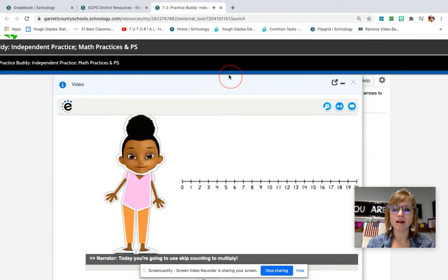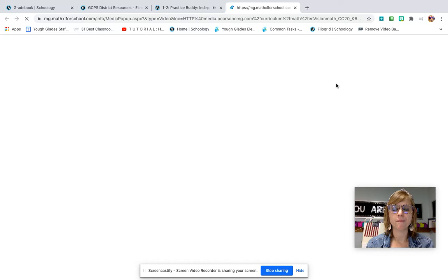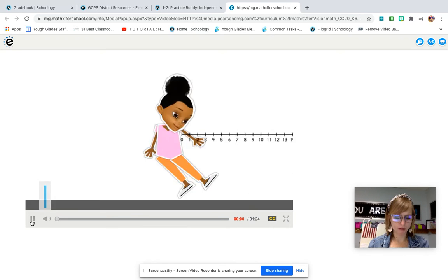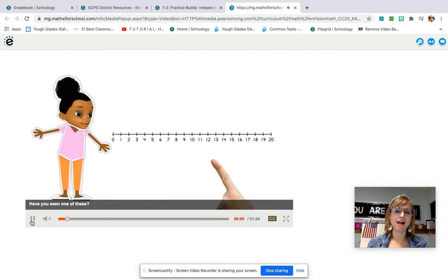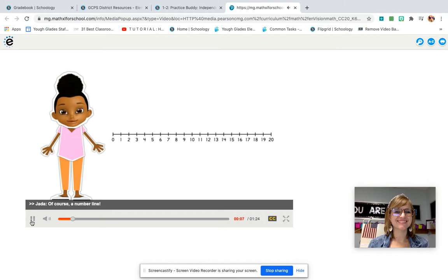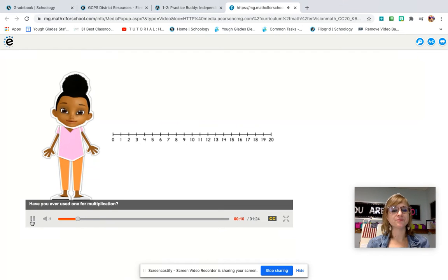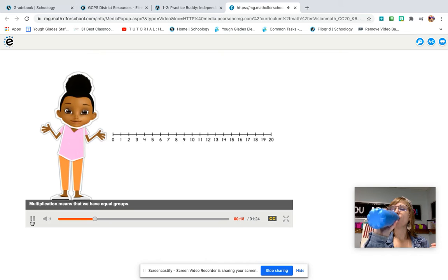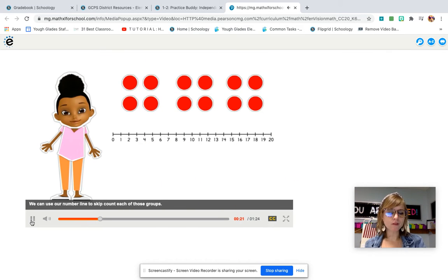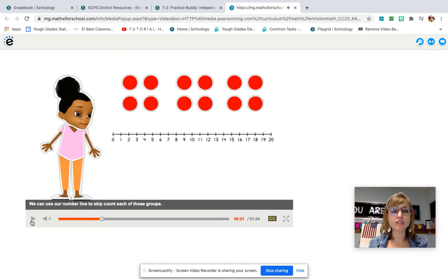Today you're going to use skip counting to multiply. Have you seen one of these? Of course, a number line. Hey, Jada, have you ever used one for multiplication? Don't worry. I'll show you. Multiplication means that we have equal groups. Remember that multiplication means we have equal groups. You cannot multiply without equal groups. Skip count each of those groups.